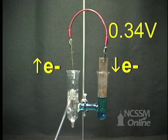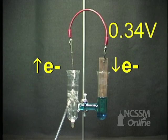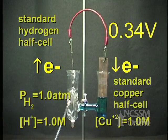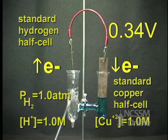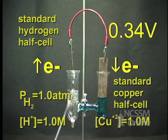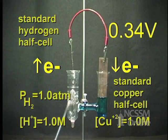In order to assign a voltage to a standard half cell, we attach the half cell to a standard hydrogen electrode. Here we have a standard copper half cell attached to a standard hydrogen half cell. Electrons flow from the hydrogen half cell to the copper half cell, and the voltage reads 0.34 volts.